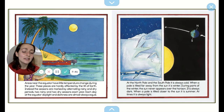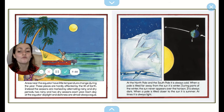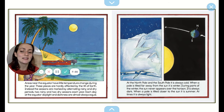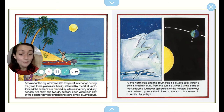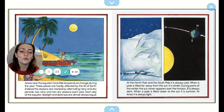Areas near the equator have little temperature change during the year. In these places, they're hardly affected by the tilt of the earth. Instead, the seasons are marked by alternating rainy and dry periods — two rainy and two dry seasons each year. Each day at the equator, daylight and darkness are almost always equal. At the north pole and the south pole, it is always cold. When a pole is tilted far away from the sun, it's winter. During parts of the winter, the sun never appears over the horizon — it's always dark all day. When a pole is tilted closer to the sun, it's summer. At times, it's always light — light all night!